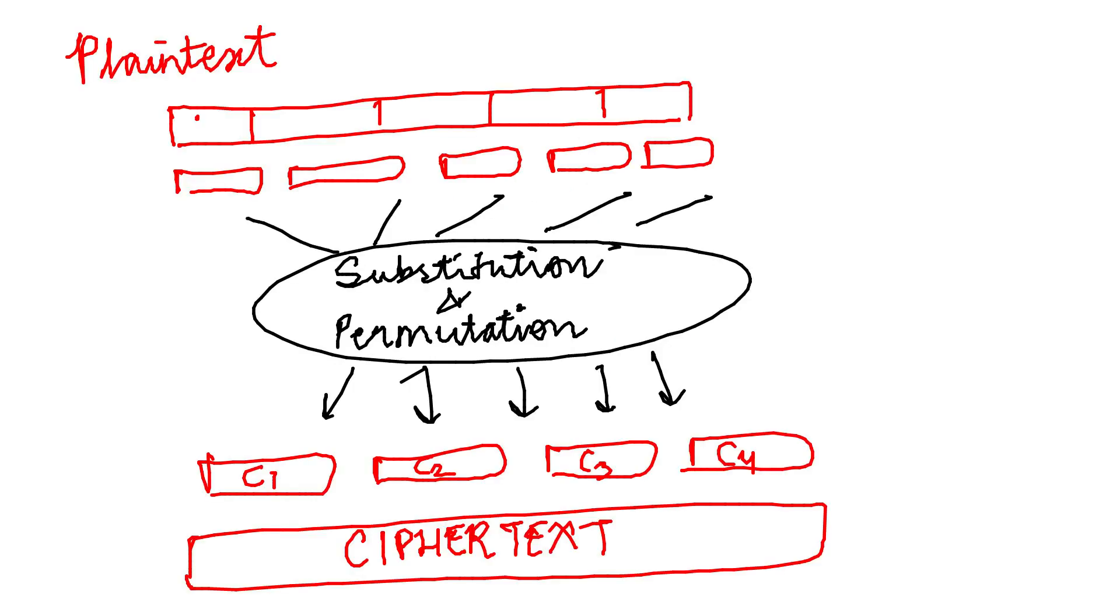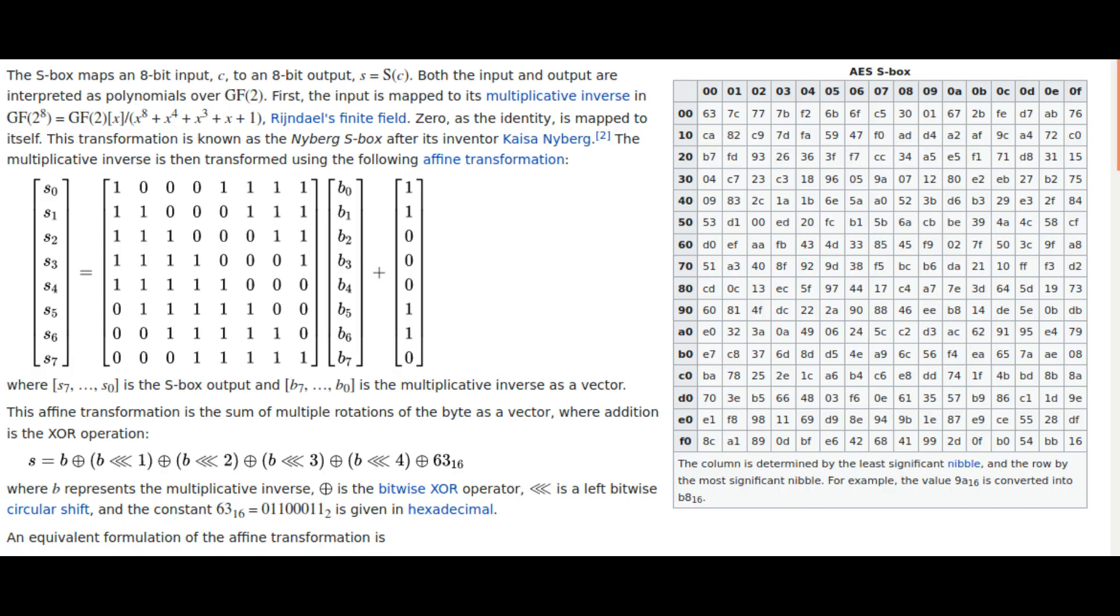In substitution and permutation network, the bytes in a block are substituted and permutated in order to achieve its randomness. It is achieved by using something called S-boxes, which transform the input byte into something else in a non-linear fashion.